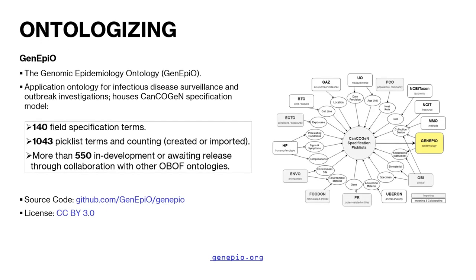GenEpio is the genomic epidemiology ontology that was developed at our lab. It's an application ontology for infectious disease surveillance and outbreak investigations, and is currently housing the CanCOGeN specification model.